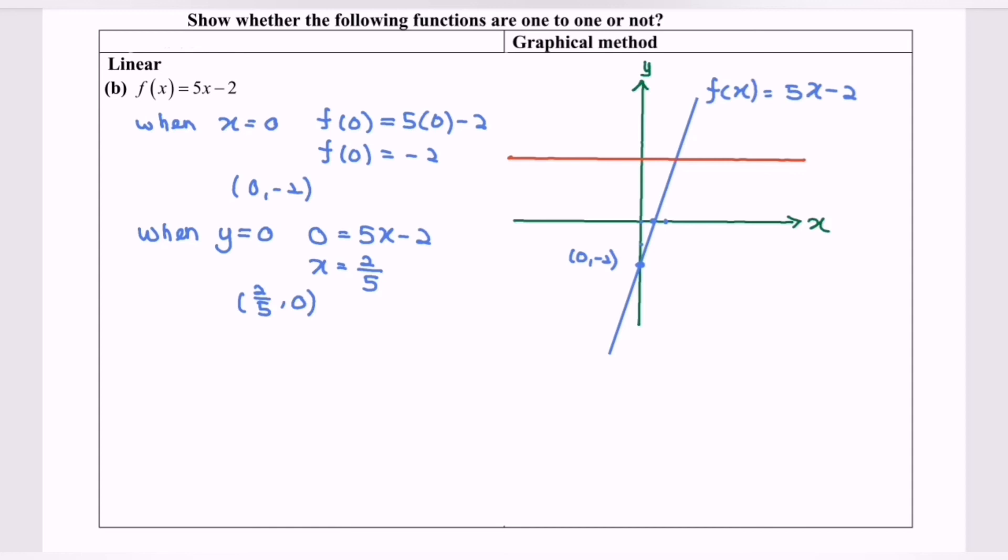Based on the diagram, we notice that the horizontal line, which is red in color, intersects or cuts the linear graph at this point. So f(x), which is 5x minus 2, is a one-to-one function.